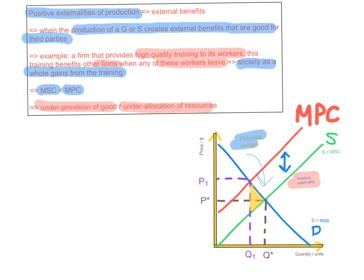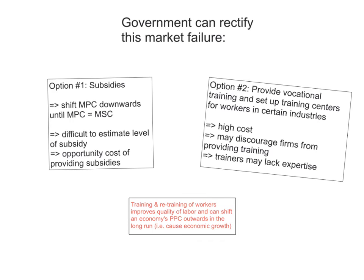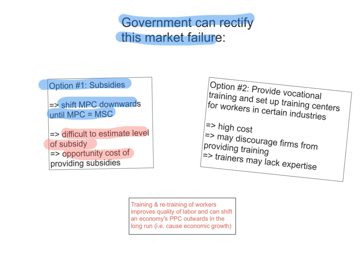So how can the government intervene in the market to correct this market failure? This good results in external benefits but is under provided — there's an under allocation of resources. There are two main ways the government can rectify this. The first option is to give subsidies. By giving subsidies, this will shift the MPC curve downwards until the marginal private cost equals the marginal social cost. However, it is difficult to estimate how much of a subsidy you should give, and there is always an opportunity cost when the government provides subsidies because that's taxpayers' money.